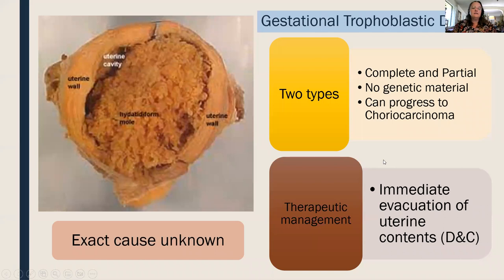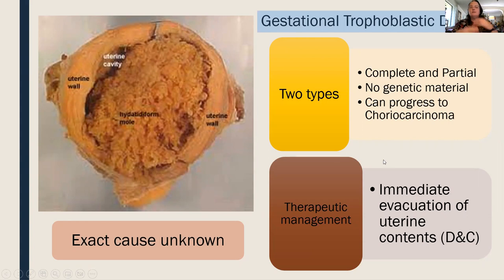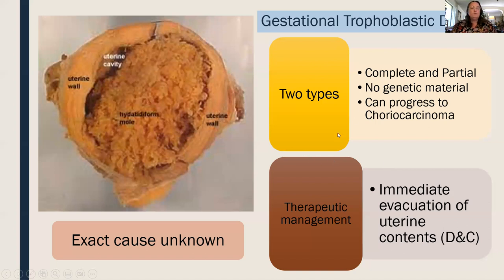Gestational trophoblastic disease is an obscure condition that appears frequently on ATI tests. The exact cause is unknown, but essentially it involves an egg without a nucleus — lacking what it needs to develop — yet the body acts pregnant and the patient believes she is pregnant. It's usually discovered when fetal heart tones cannot be found at 15 to 20 weeks. It must be removed with a D&C and can progress to carcinoma, so uterine cancer surveillance is required afterward.